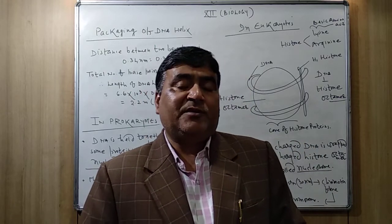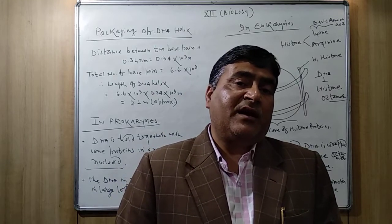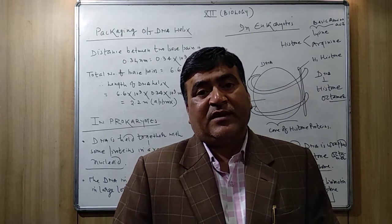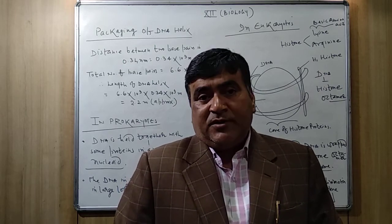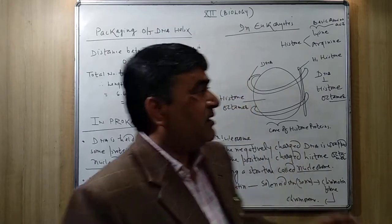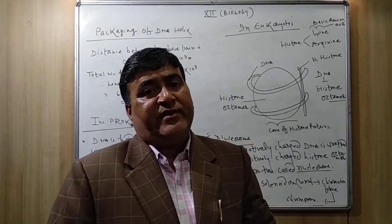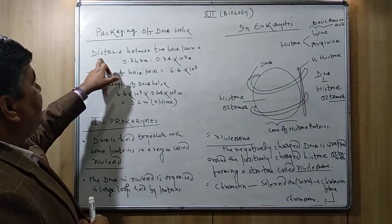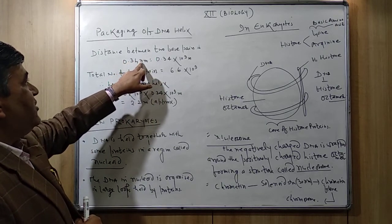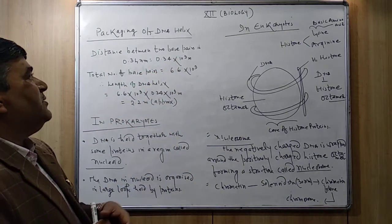We will discuss how the process of packing takes place inside the prokaryotic cell and in the eukaryotic cell. First of all, before the packaging of the DNA, let's calculate the size of a DNA helix. The distance between two consecutive base pairs is 0.34 nanometers, or 0.34 × 10⁻⁹ meters.